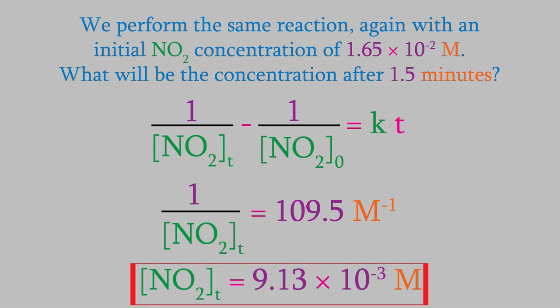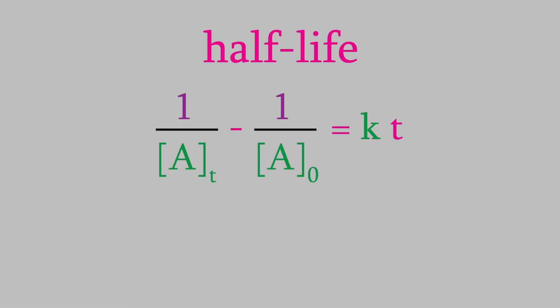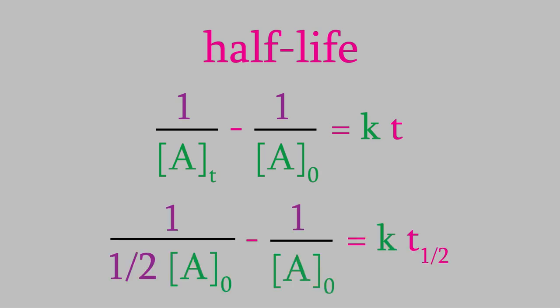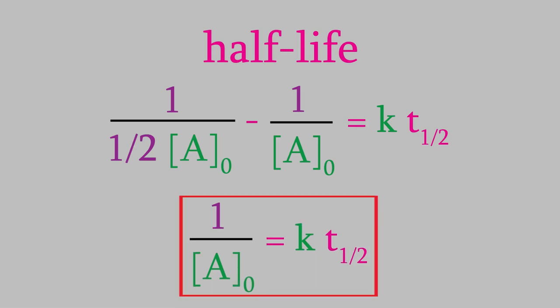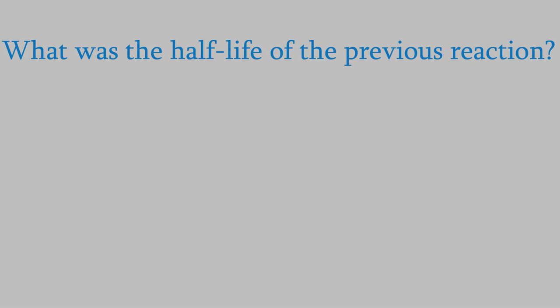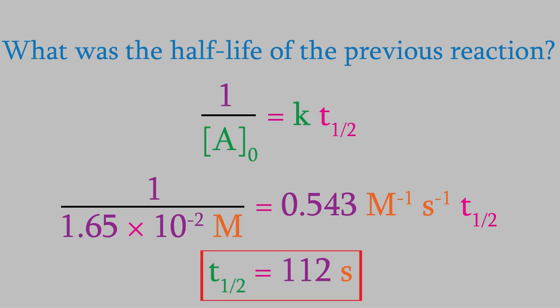Now, just as we did for first-order reactions, we can calculate the half-life of second-order reactions. We do that by remembering that at the half-life, half the reactants have been used up, so the concentration of reactants will be half the original concentration. We'll put that in the denominator of the first fraction, which gives us 2 over A0 for the first fraction, minus 1 over A0 for the second fraction. When we combine those, we get 1 over A0. So that's the equation for the half-life of a second-order reaction. Let's use it — what would be the half-life of the second-order reaction from the previous question? We know the rate constant and the initial concentration, so we'll plug those into our equation. When we do, we get 112 seconds.